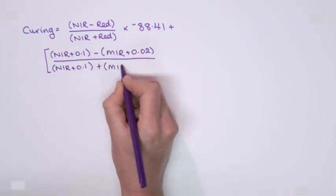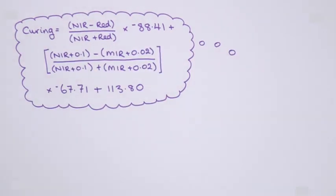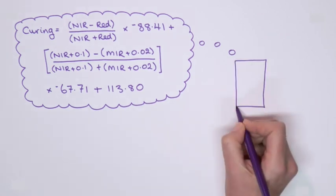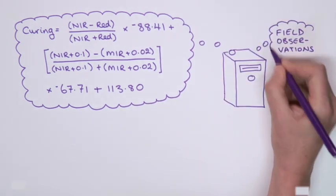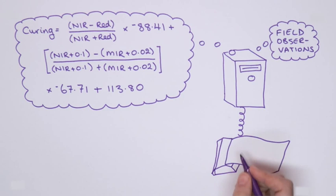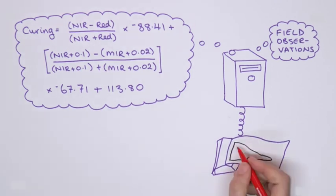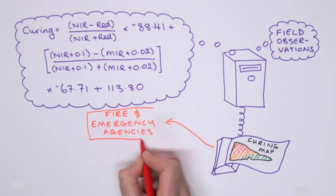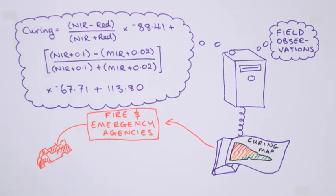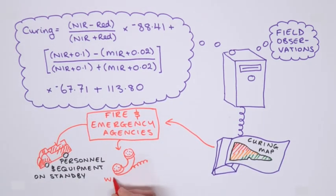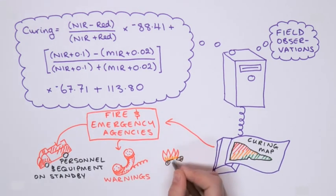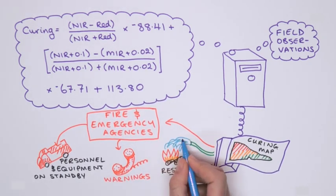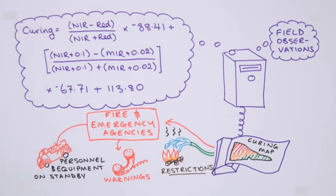Weekly satellite data are used in this equation. The results are combined with weekly field observations to produce a map of grassland curing. The map helps fire and emergency agencies to determine whether to put personnel on standby, to issue public warnings, or to declare restrictions such as total fire ban days.